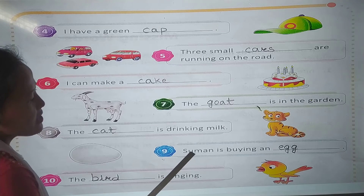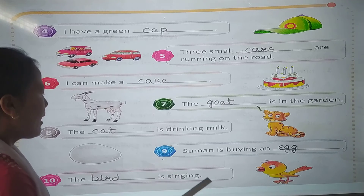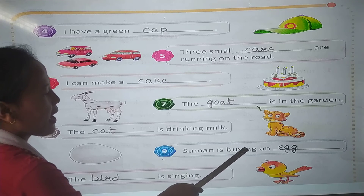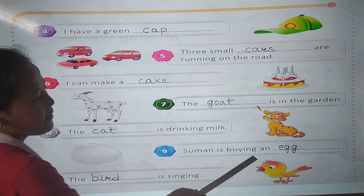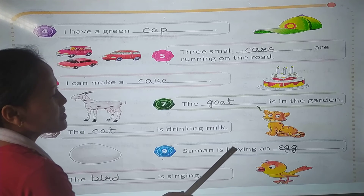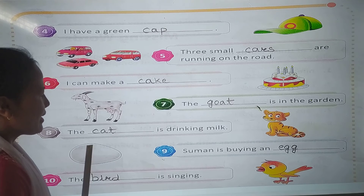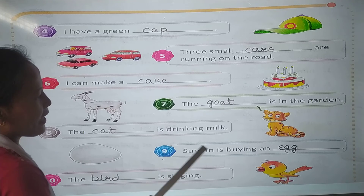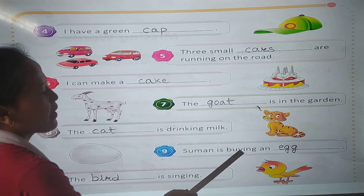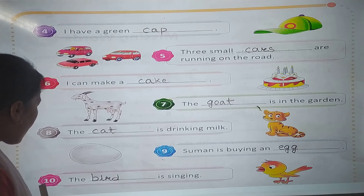In number 9: Suman is buying an — what is this? Yes. Egg. Suman is buying an egg.